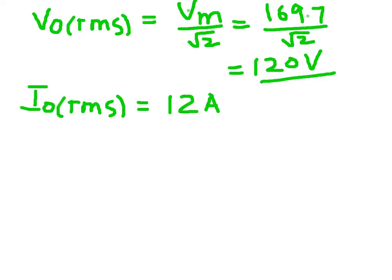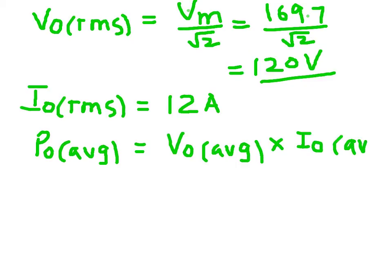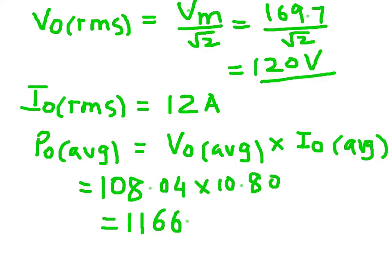The next part is about average output power. P_o average is given by the multiplication of V_o average times I_o average. We know both these values: 108.04 times 10.80. If you multiply them, that gives you 1166.83 watts, since voltage is in volts and current is in amperes.